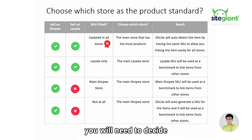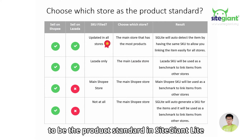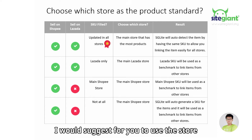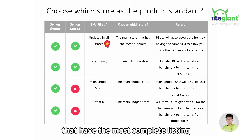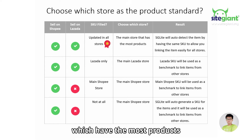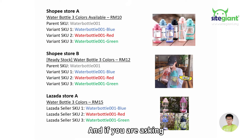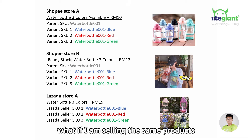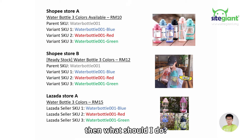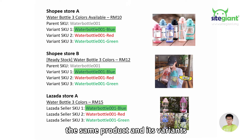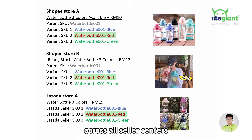First, you need to decide which store to use as the product standard in SiteGiantLite. It is recommended to use the store with the most complete listing — the most products and properly entered SKUs — so that the linking process is easier. If you are selling the same products across different marketplaces, ensure that the same product and its variants have the same SKU across all Seller Centers.